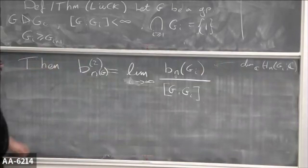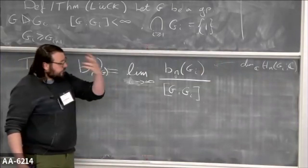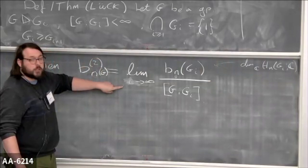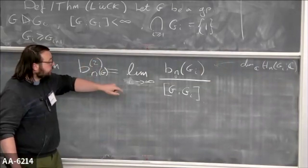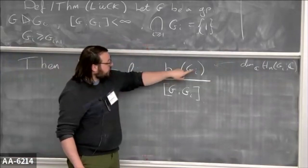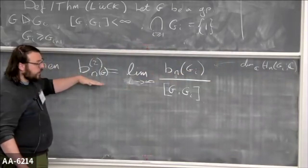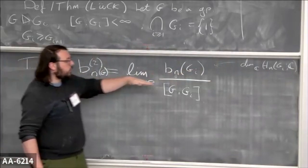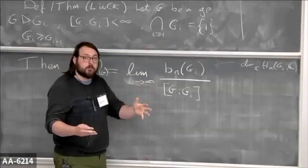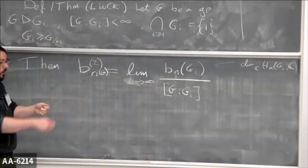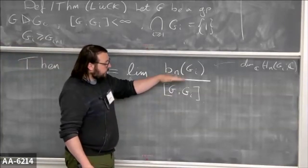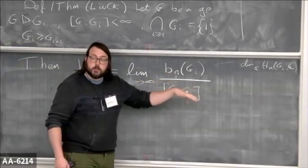This really lets you do computations for groups you know about. For instance, for free groups, you know the first L² Betti number of free groups, and you know the first Betti number of finite index subgroups — it's just the rank of that finite index subgroup. You can compute that using Schreier's formula, which tells you exactly how to compute it in terms of the index, and then you can take this limit.